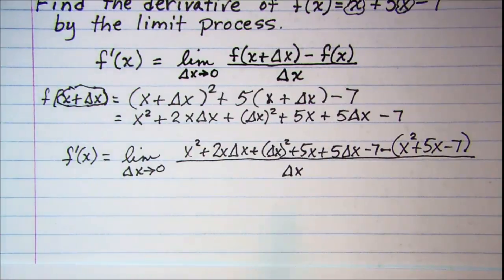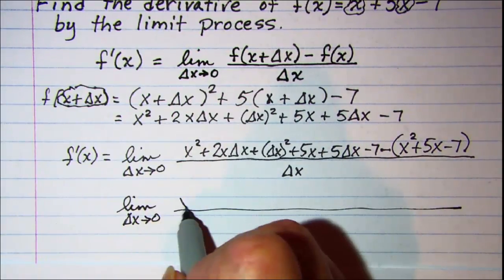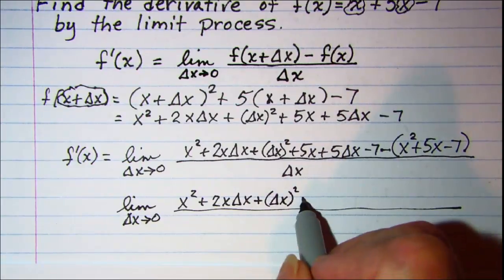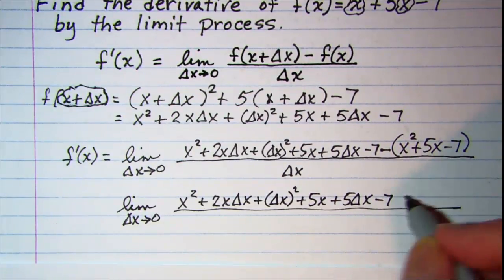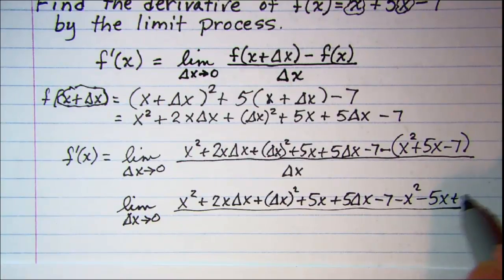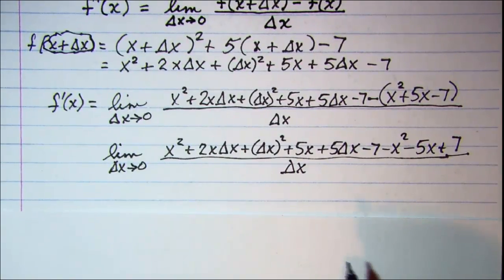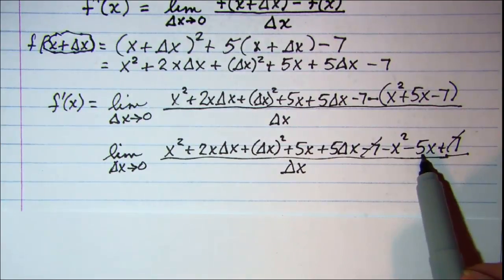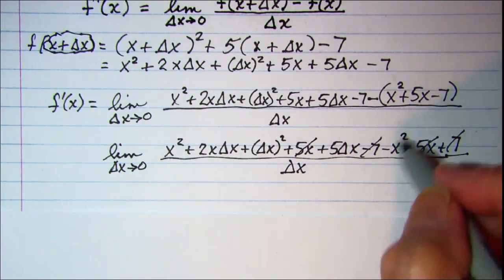Now let's distribute the negative sign through the trinomial. I see a positive 7 and a negative 7 — those cancel. I have a negative 5x and a positive 5x — those cancel. And I have a negative x squared and a positive x squared — those cancel.